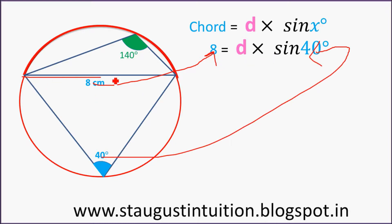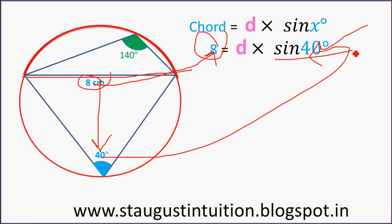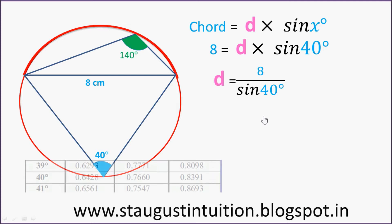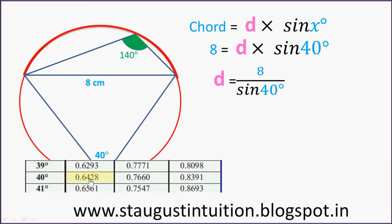So if you have a triangle, you can see that the angle is opposite. If you have a triangle, you can see that the angle is equal to sine. It is equal to D. Then D is equal to sine. If you have a triangle, the angle is equal to sine. So D is equal to sine.